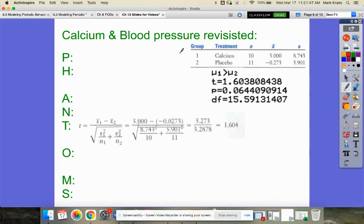And so let's try one real quick. All right. So calcium and blood pressure. We talked about this earlier. Our parameter is, we'll often call it mu difference is the true mu difference of calcium minus placebo.